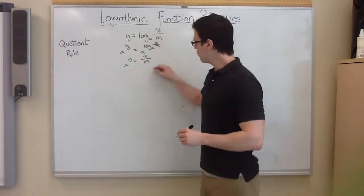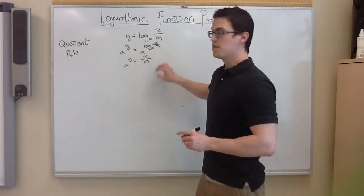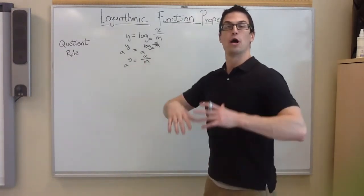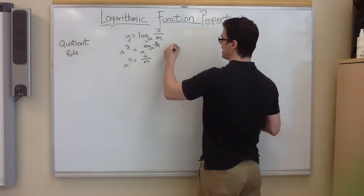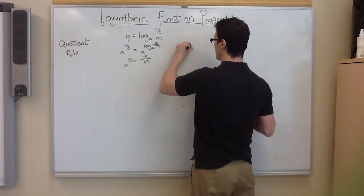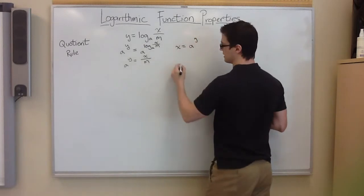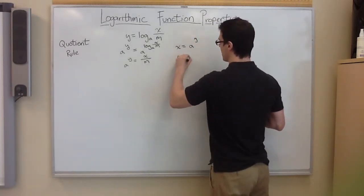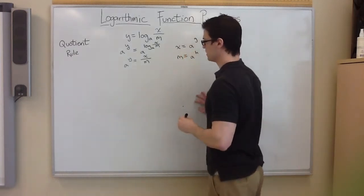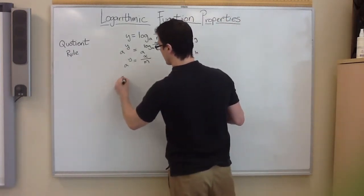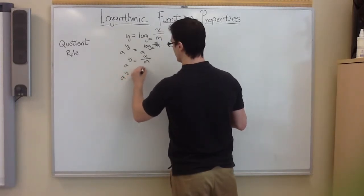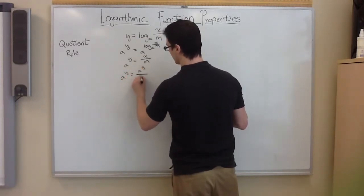From here, I want both this and this to have the bases of a. Right now, this has the base of a, but these don't. So I'm just going to make up values for x and m so that they have a base of a. So I'm going to do a to the g like I did for the product rule. And for m, I'm going to do a to the h power. I'm going to substitute these values in now. So we're going to have a to the y equals a to the g over a to the h.